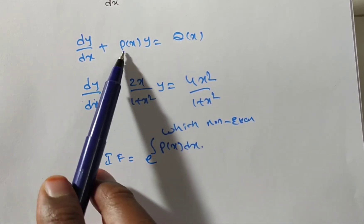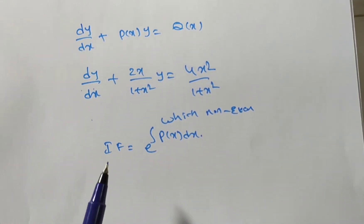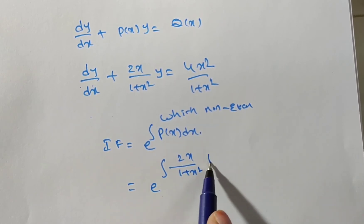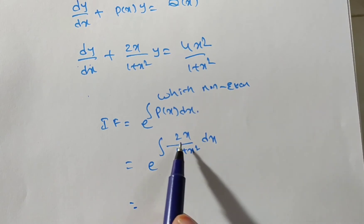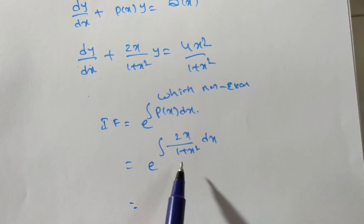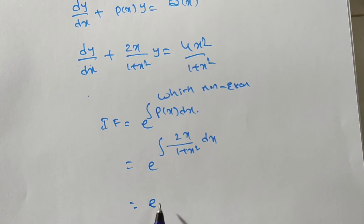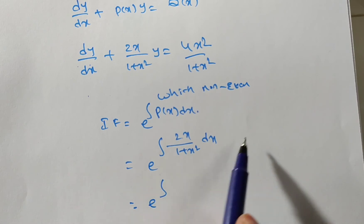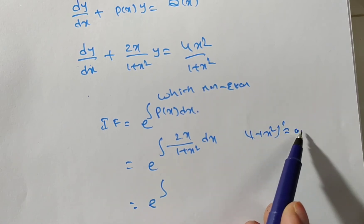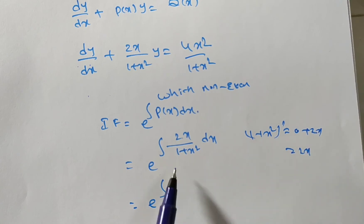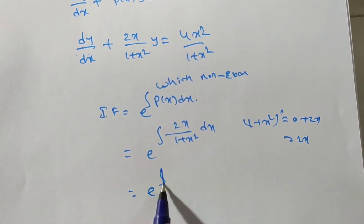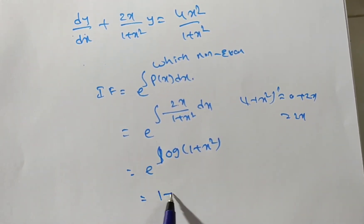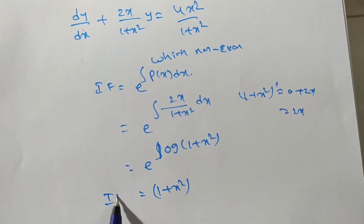What is P(x) here? P(x) = 2x/(1 + x²). So we write e to the power of the integral of 2x/(1 + x²) dx. The numerator 2x is the derivative of the denominator (1 + x²), since the derivative of (1 + x²) is 2x. When the denominator's derivative is in the numerator, the integral is log of the denominator. So the integral is log(1 + x²), and e and log cancel, giving us 1 + x² as the integrating factor.